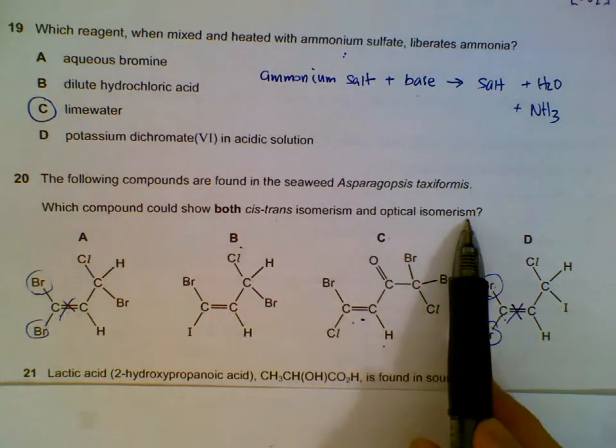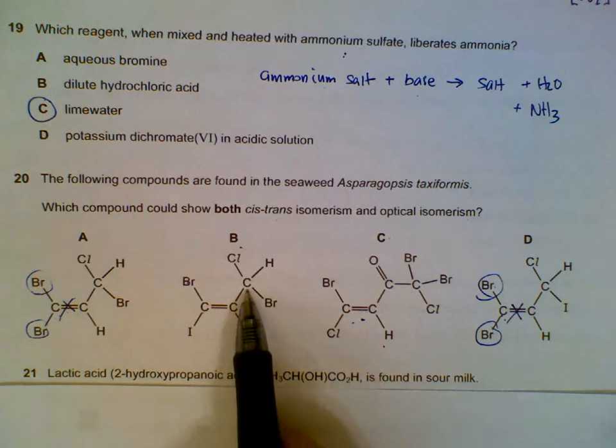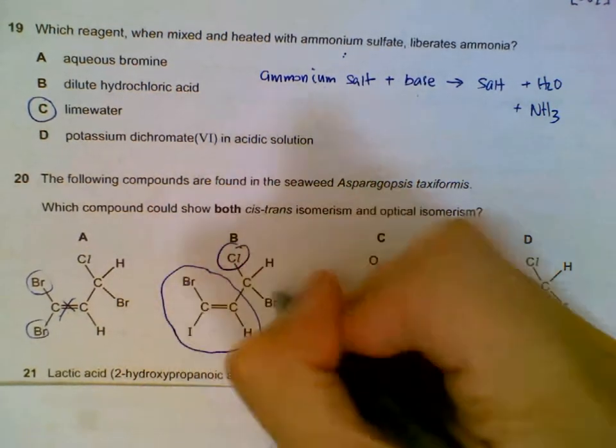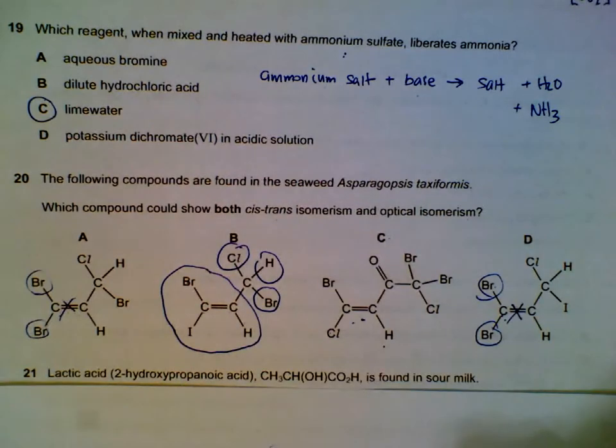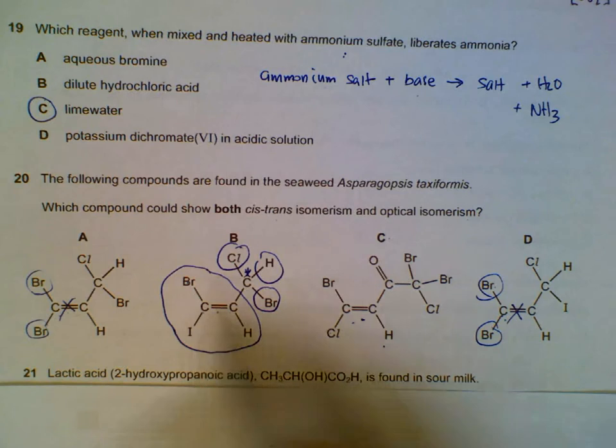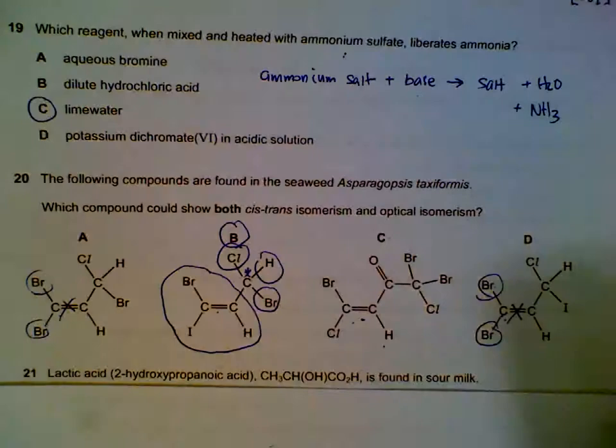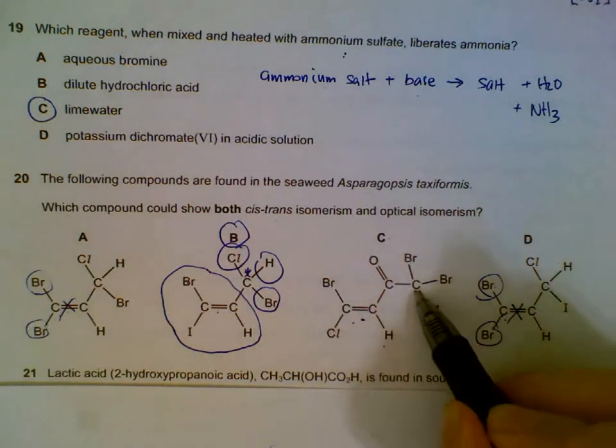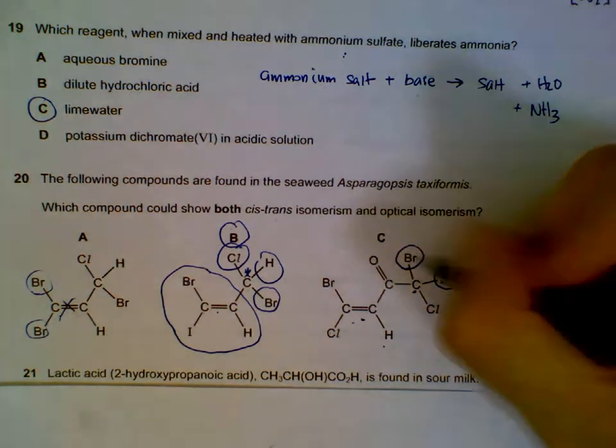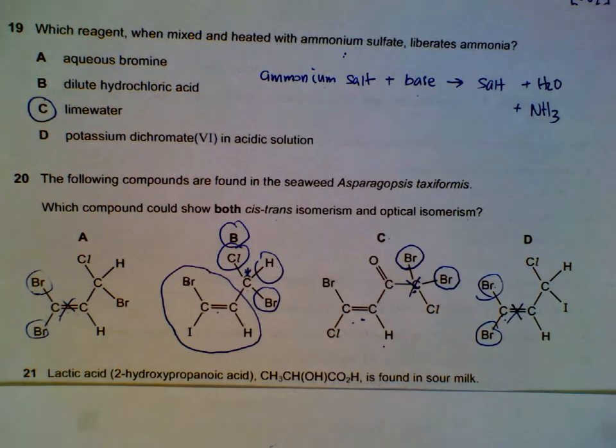We check optical isomerism. For optical isomerism, we look to see if there's a carbon containing four different groups. Looking at this carbon, we have one group, two, three, four—all four of them are different groups. So this is our chiral carbon. It will display optical isomerism, and this is where the cis-trans actually happens. So the answer is B. But we check C just in case. This one has four groups attached, but they are not four different groups. We have two bromines attached here, so there's no optical isomerism produced by this molecule. This is not chiral, so we don't have optical isomerism.